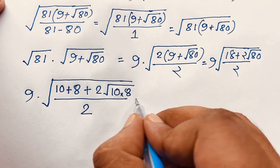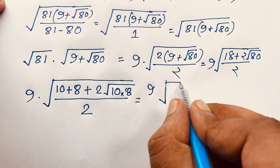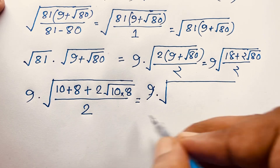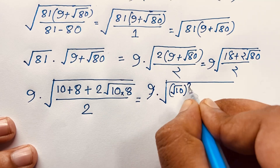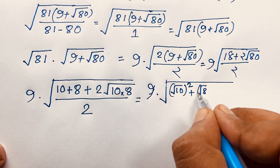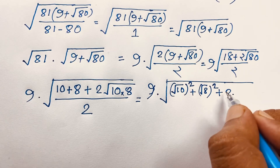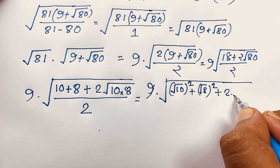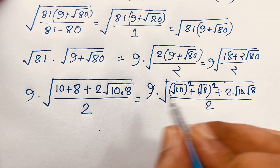Now if I evaluate this expression further, you can see it will be 9 times square root of: (square root 10) whole squared, plus (square root 8) whole squared, plus 2 times square root of (10 times 8), over 2. Note that square root of AB equals square root A times square root B, so it will be square root 10 times square root 8, over 2.